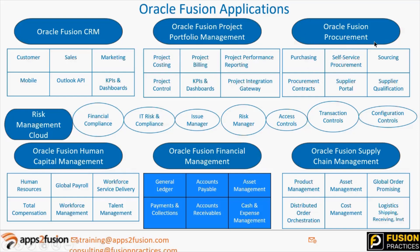Oracle Fusion has different pillars: CRM (Customer Relationship Management), Project Portfolio Management, Fusion Procurement, Human Capital Management, and Supply Chain Management. The area of focus for these trainings is Fusion Procurement and Order Management, which is part of Supply Chain Management. SCM includes cost management, global order promising, logistics, manufacturing, and distributed order orchestration. Procurement includes purchasing, self-service procurement, and sourcing.